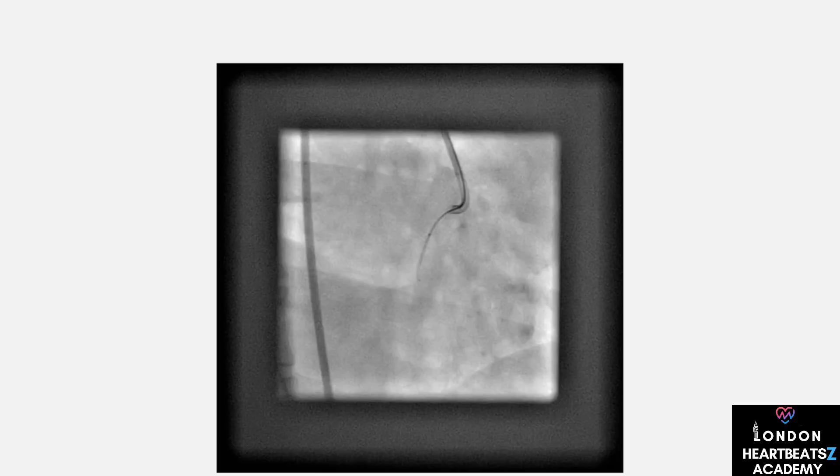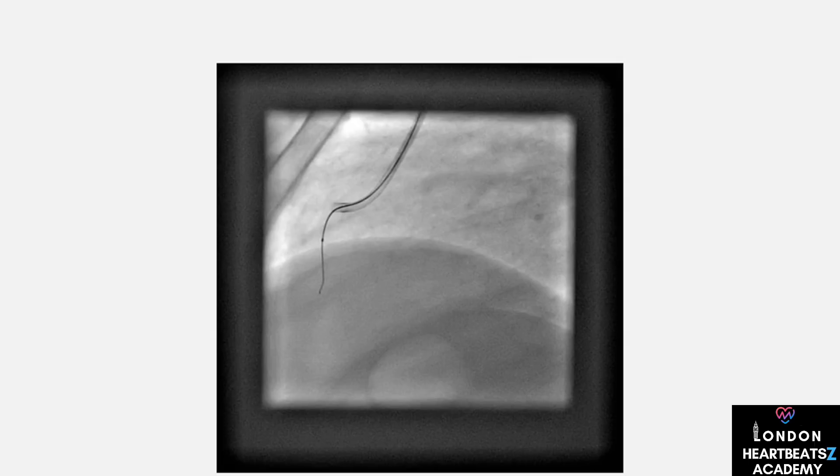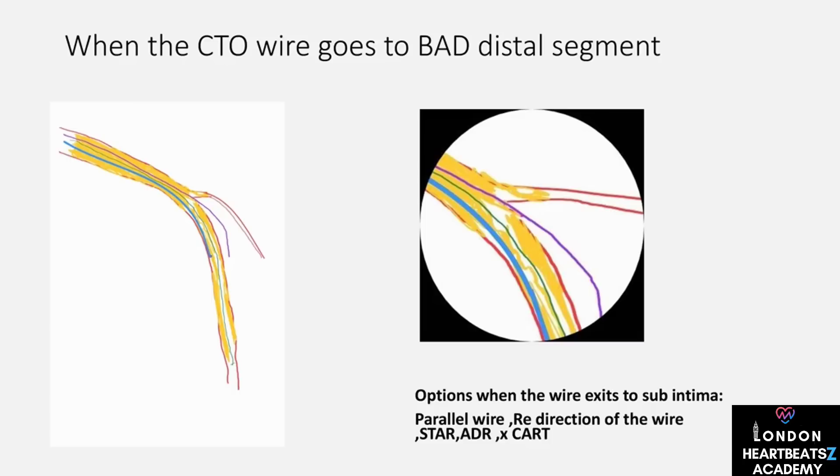Micro-channel probing is an art form — it's not just about seeing the micro-channel and navigating it. Many of these channels are invisible. Even in ambiguous stumps, an invisible micro-channel might exist. We keep the tip of the wire straight and stop when it buckles, relying more on visual cues than tactile feedback. In one case, we used the JCTO score to guide our approach and employed micro-channel probing with the Fielder XDR wire, confirming true lumen position using visual cues like aspirating blood and checking for pressure waveforms.